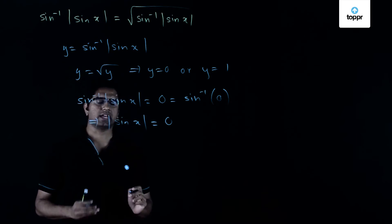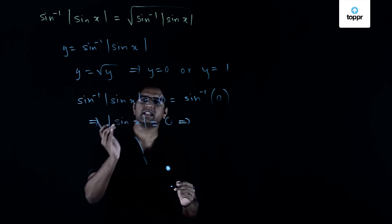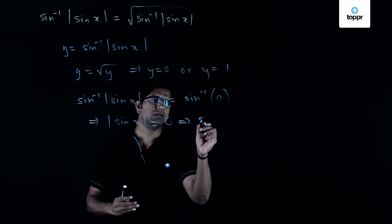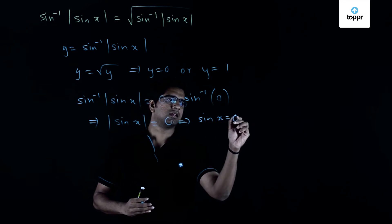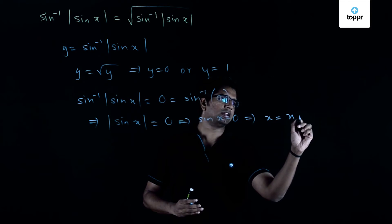When does this happen? This happens when sine x itself is equal to 0, which implies x is equal to any multiple of pi.